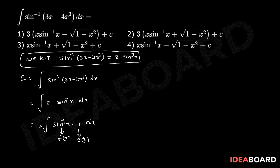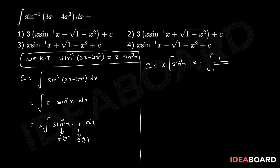That equals 3 into f of x, which is sin inverse of x, into integration of 1 dx, that is x, minus integration of the derivative of sin inverse of x, which is 1 by square root of (1 minus x square), into integration of 1 dx, that is x dx.